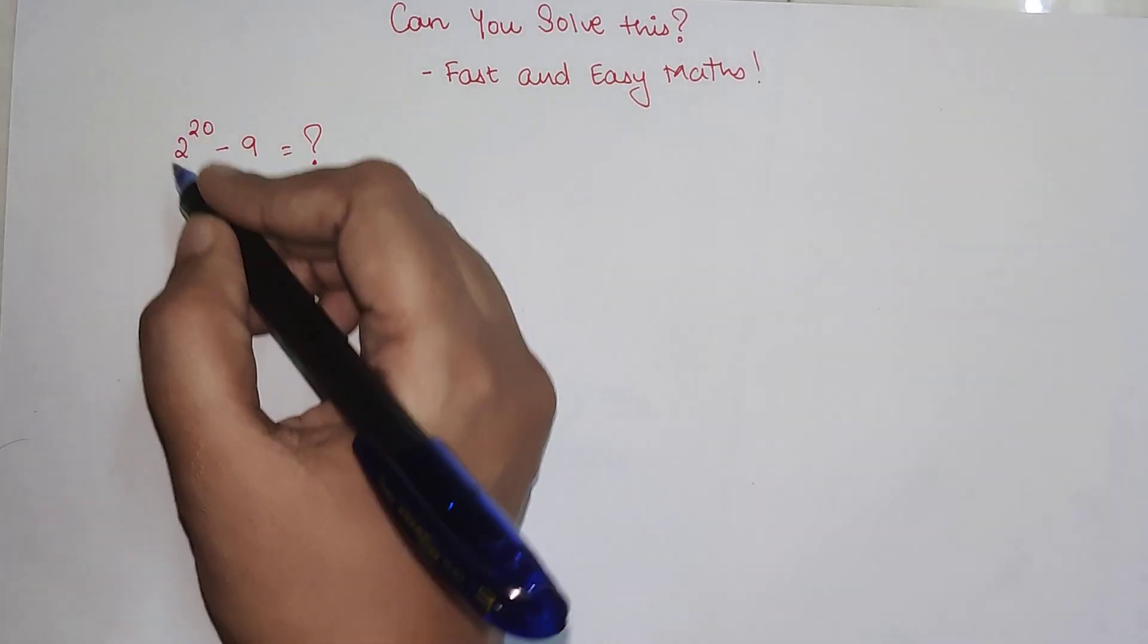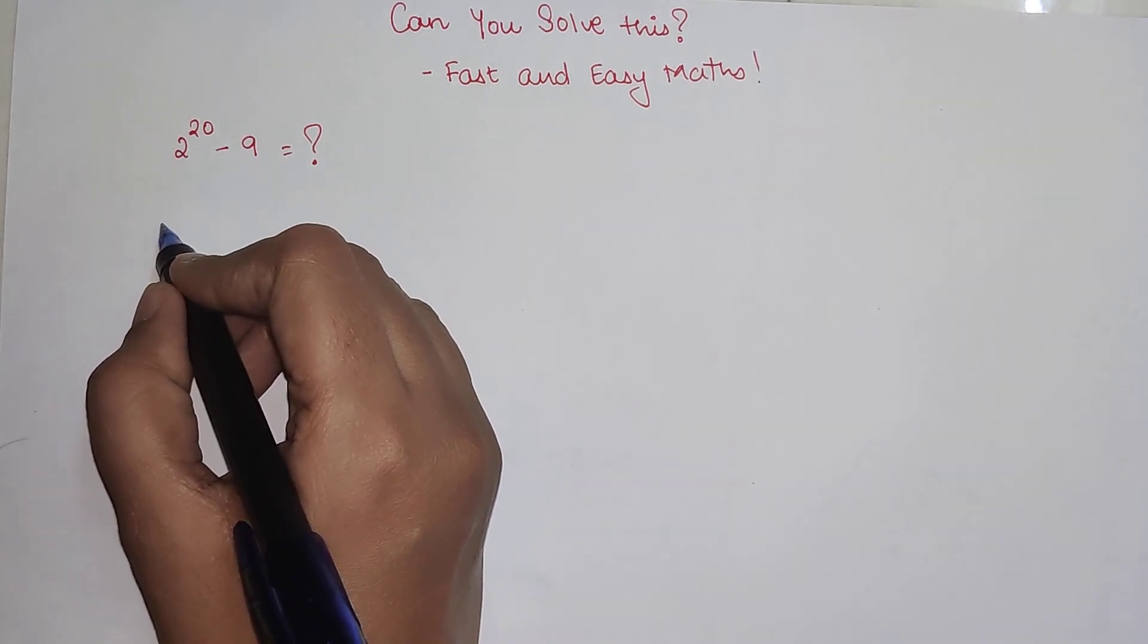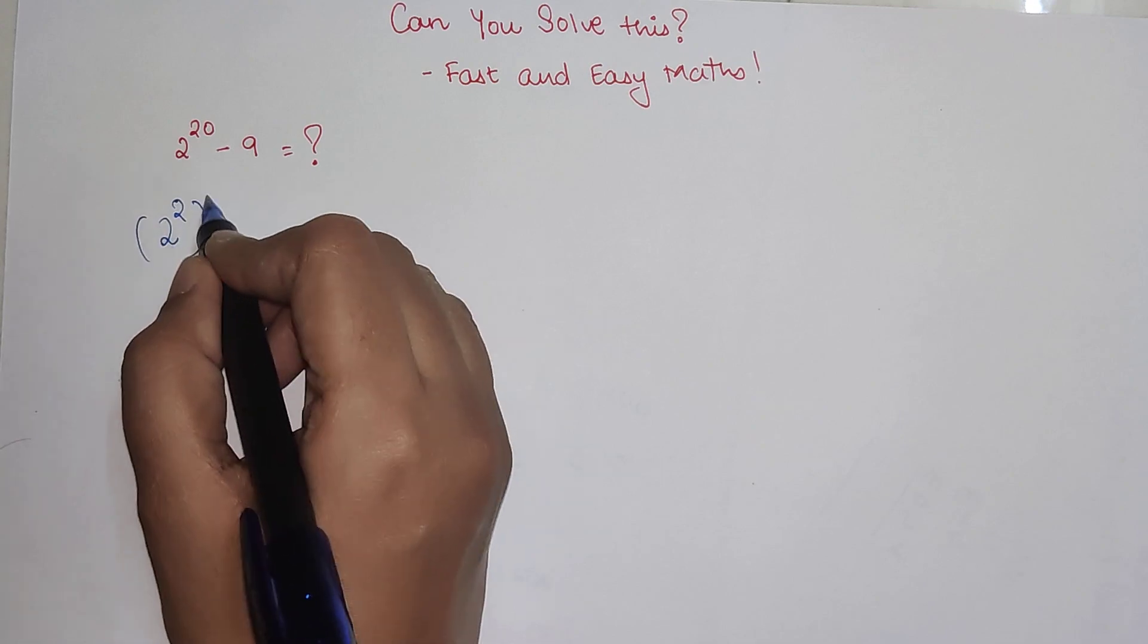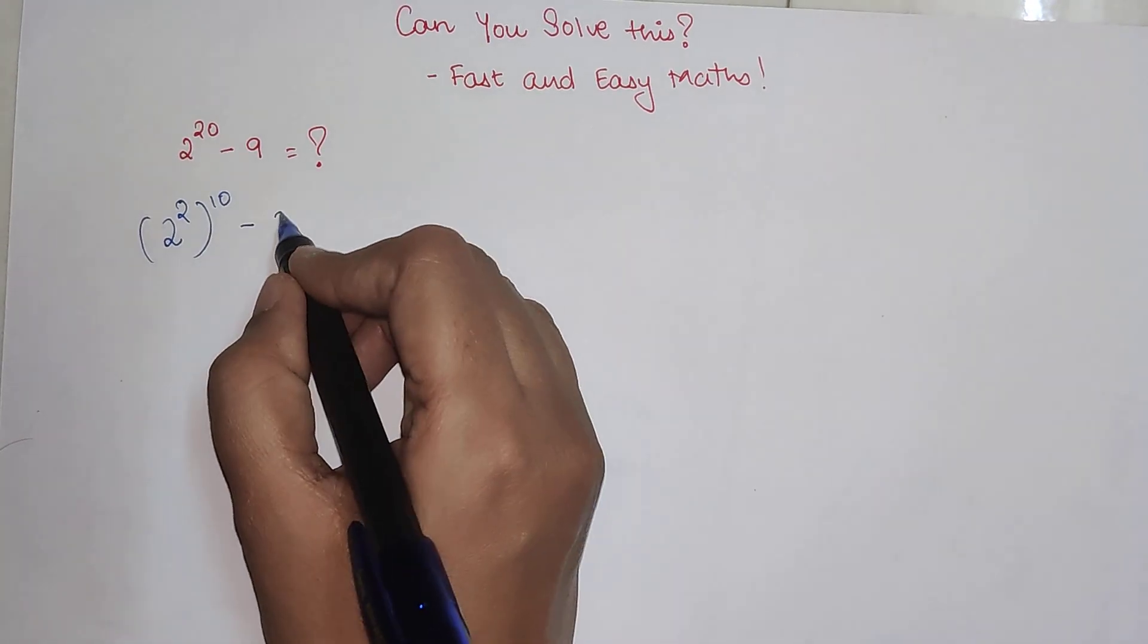I can write 2^20 as (2^2)^10. And this 9 can be written as 3^2. Here I'm applying the formula (a^m)^n.